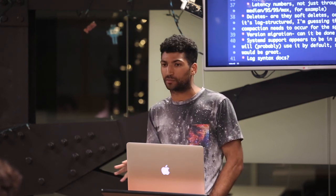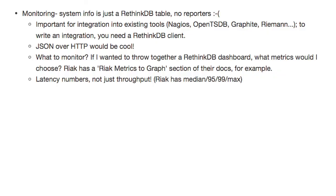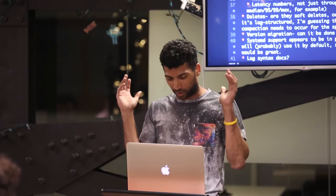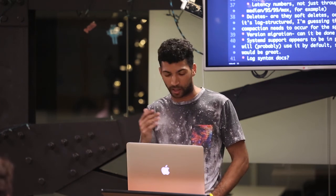A perfect example of which metrics to pay attention to is in the Riak documentation. Riak is a distributed key-value database written by Basho. They have a section that talks about specific metrics you want to pay attention to, because when you look at JSON over HTTP endpoints it's a barrage of metrics. As an operator you don't know which ones matter. What are the three, four, or six numbers you really want to pay attention to and maybe alarm on?